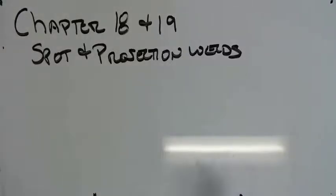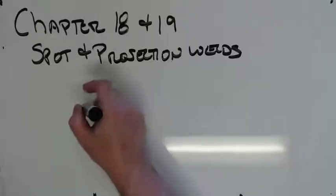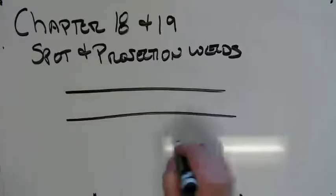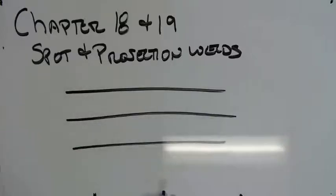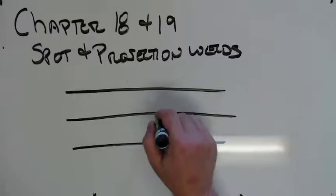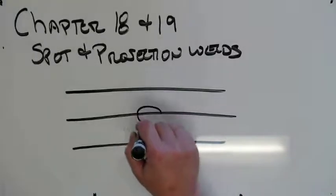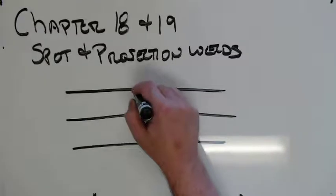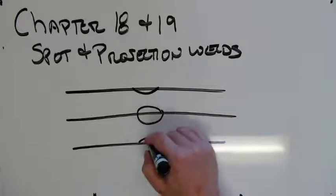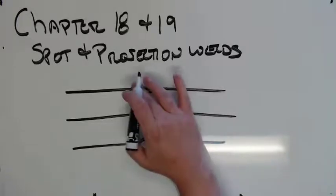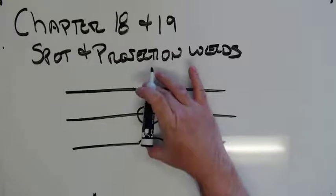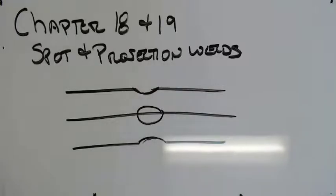So spot welds are made between overlapping members of a joint. The completed weld will have a circular cross section. So our weld will have a circular cross section in here. There'll be a little bit of indentation top and bottom because these arms are pressing down. That's really key. That pressure is one of the most important things about spot welds. Without that pressure, we won't have the proper shunt.